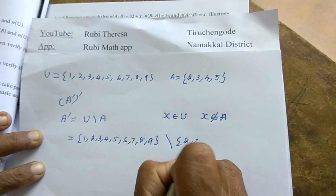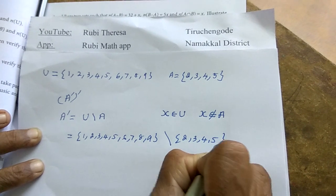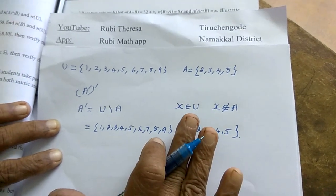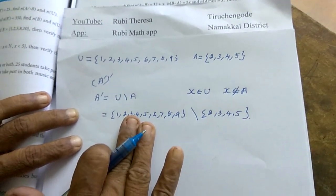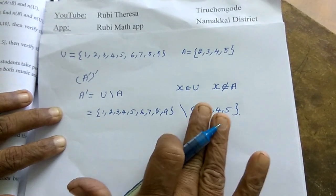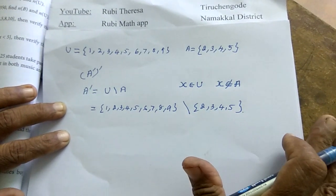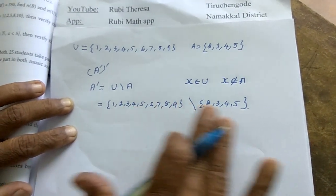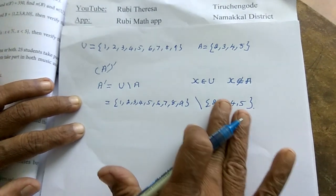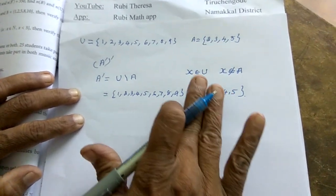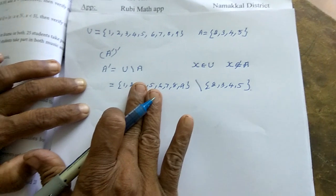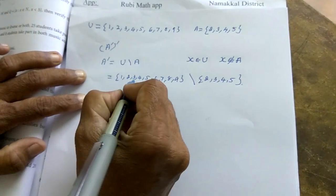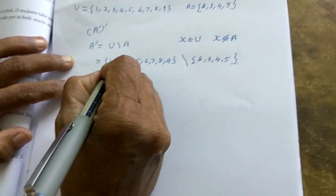Difference A set: 2, 3, 4, 5. That is other than the elements in the universal set, other than set A. The elements in the universal set other than A. So the elements not in A.